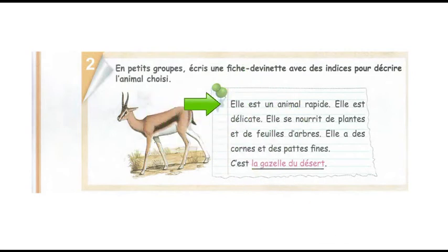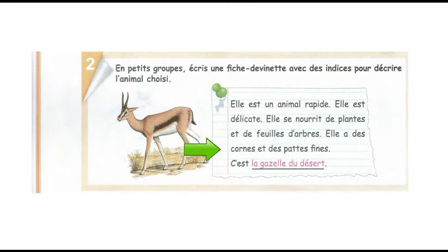Elle est un animal rapide. Elle est délicate. Elle se nourrit de plantes et de feuilles d'arbres. Elle a des cornes et des pattes fines. C'est la gazelle du désert.